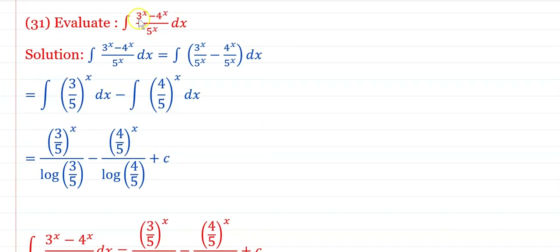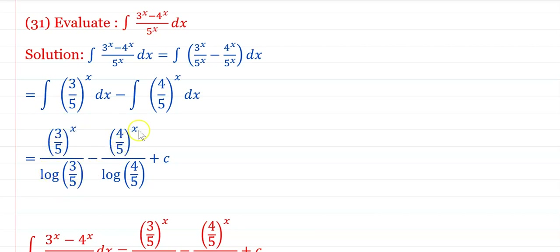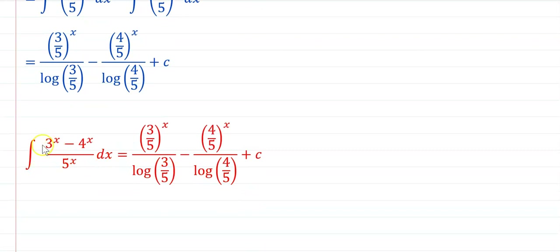Evaluate ∫(3ˣ − 4ˣ)/5ˣ dx. Separating: ∫(3/5)ˣ dx − ∫(4/5)ˣ dx. Using ∫aˣ dx = aˣ/log a, the answer is (3/5)ˣ/log(3/5) − (4/5)ˣ/log(4/5) + C.